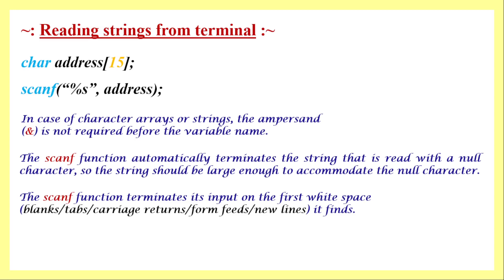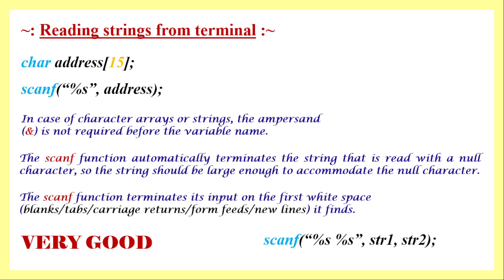The question then is: how do we read a string that has a space between two words, for example 'very good'? The solution is to use two string variables — string1 and string2 — and use two format specifiers in a single scanf call. The first '%s' is linked to the first string variable and reads 'very', while the second '%s' is linked to the second string variable and reads 'good'.